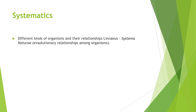Systematics deals with different kinds of organisms and their relationships. Linnaeus's system of classification considers evolutionary relationships among organisms.